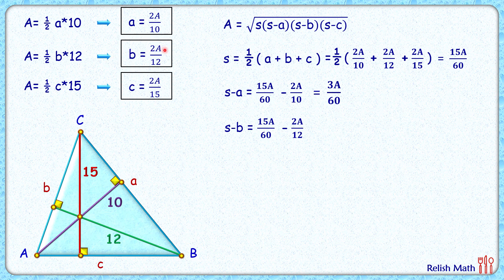So that will be 5A/60. And s minus c, that's 15A/60 minus 2A/15, or s-c is 7A/60. Now putting all these values of s, s-a, s-b, and s-c into the area formula, we'll get our equation in this form.